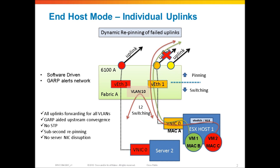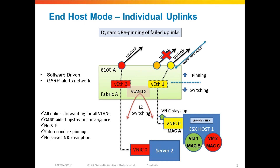What would happen if that orange uplink were to fail? Now that path is no longer available. As we discussed previously, dynamic repinning will occur. The fabric interconnect is going to pick a new uplink for vNIC0, and this happens sub-second. Meanwhile, the vNIC0 for the server stays up — there's no disruption shown to the ESX host. A new uplink is picked — in this case, the yellow uplink.